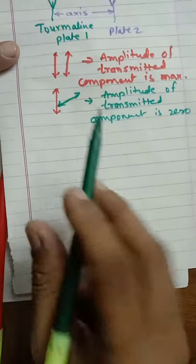So this variation in the amplitude of the transmitted component from the second plate is found to be a function of cosine of the angle theta between the axes of polarizer and analyzer.